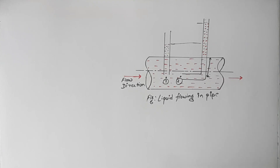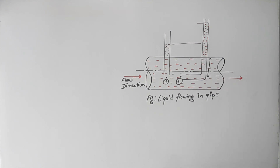In the last video we derived an expression for the pitot tube and some method for calculating the discharge or discharge velocity. We also covered methods for calculating the velocity of flow using a pitot tube. Today we will study some terms related to the pitot tube which arise while we solve numericals of the pitot tube.